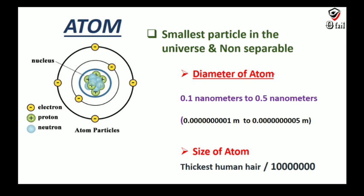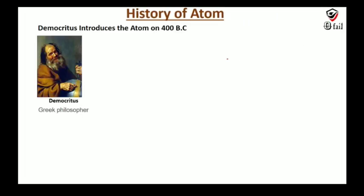The diameter of the atom is 0.1 nanometer to 0.5 nanometer. Nanometer is 10 power minus 9 meter. Take human hair, just an approximation. Just divide it into 5 to 10 lakh pieces. That small piece is an atom. Can you imagine?